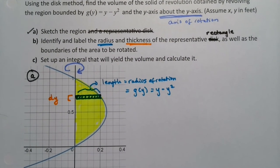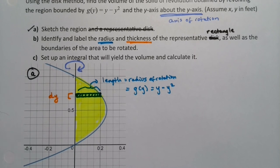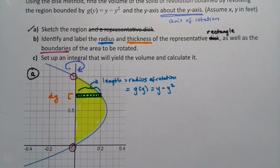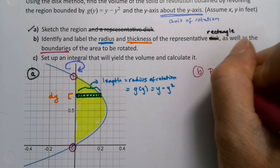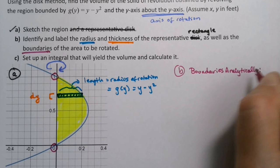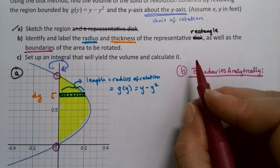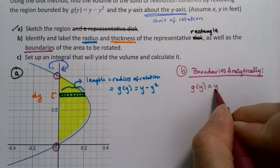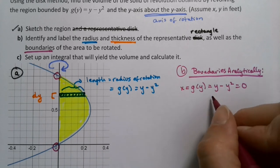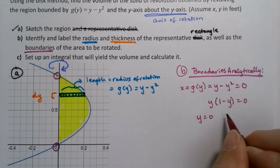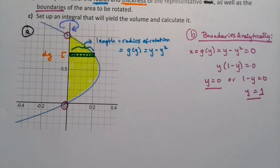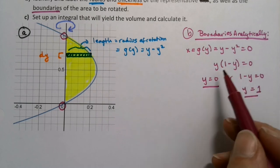I do need my boundaries, so my boundaries are going to be from down here to up here. I can tell from Desmos that my boundaries are zero and one. If you want to find your boundaries analytically, you would want to set g(y), which is y minus y squared, equal to zero because the y-axis is when x equals zero. Then that would be y(1 - y) equals zero, which means either y equals zero or 1 - y equals zero, which means y equals one.